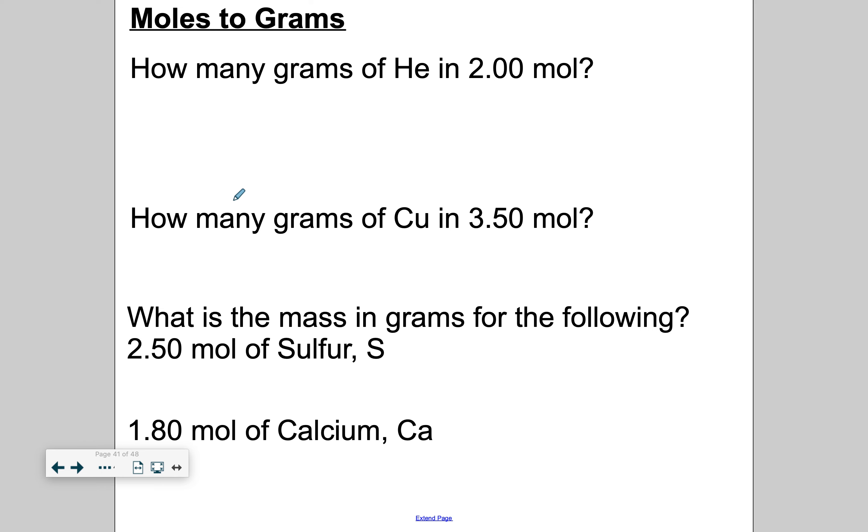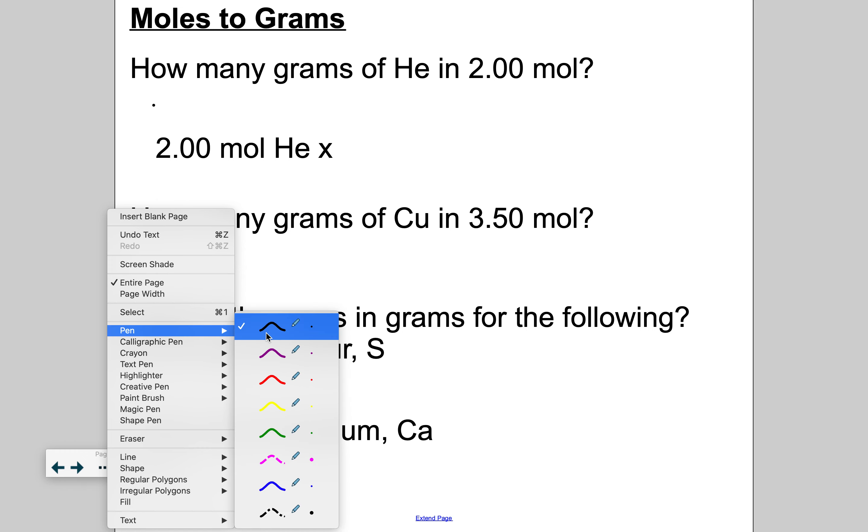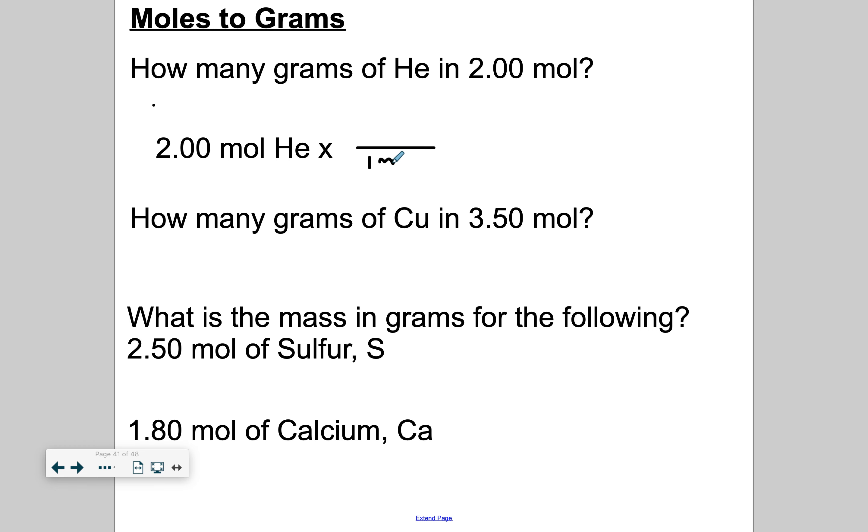How many grams of helium in two moles? So you're going to start with what you're given. 2.00 moles of helium. I'm going to set it up. I'm in moles, so that one mole is going to go on the bottom. And then the molar mass of helium, I'm looking at the periodic table, is 4.00 grams per mole. So 2.00 times 4.00, it's eight. And according to sig figs, we're going to go to three. And my unit is grams of helium.